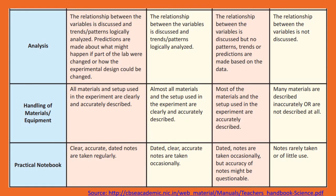Similarly, if learners are handling any material or equipment in the lab: if all material and setup used in the experiment is clearly and accurately described, give them 4. If they have listed all the material and setup but not as clearly, give them 3. If they have included most of the material and setup but in a haphazard manner, give them 2. If they have missed certain material or described it inaccurately, give them 1. There can be criteria for everything in the lab — you need to prepare such rubrics for your students when using rubrics as an assessment tool.